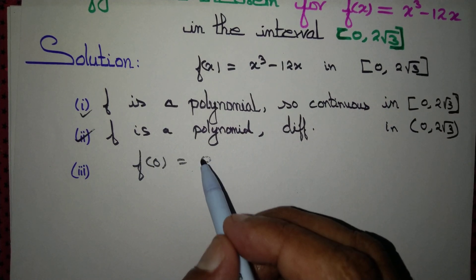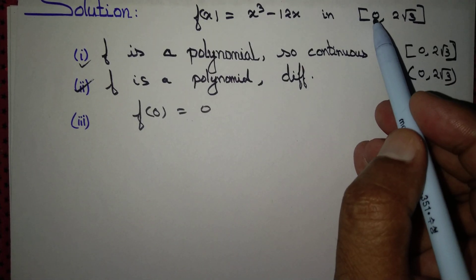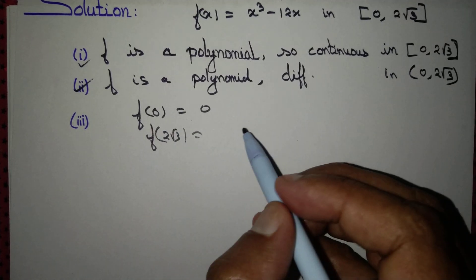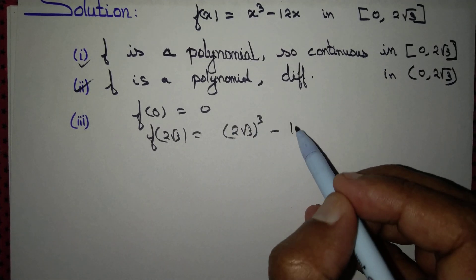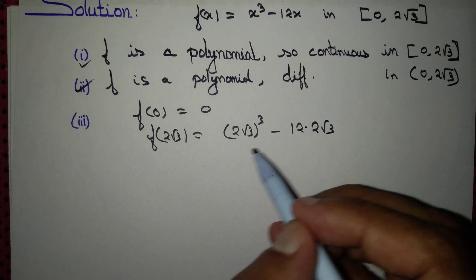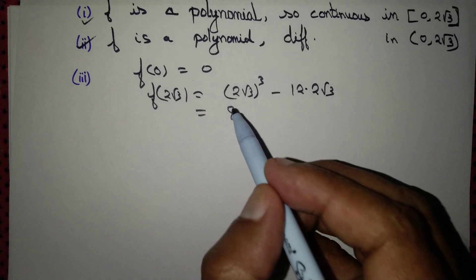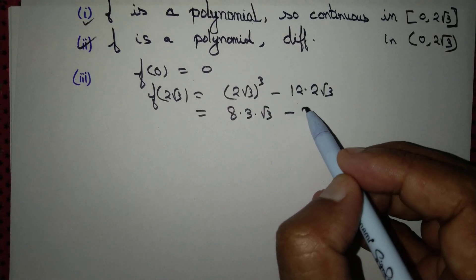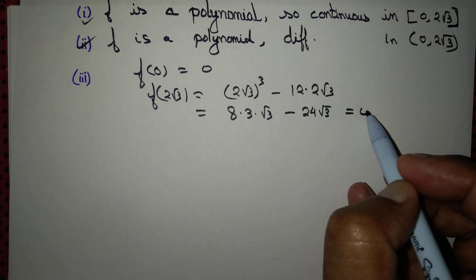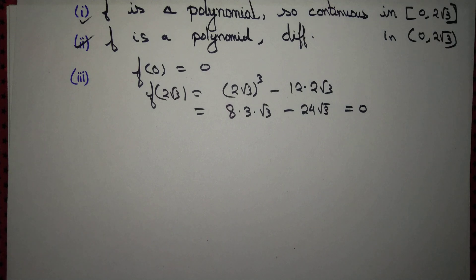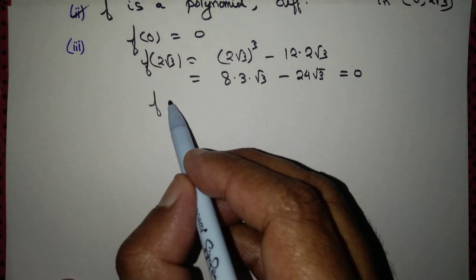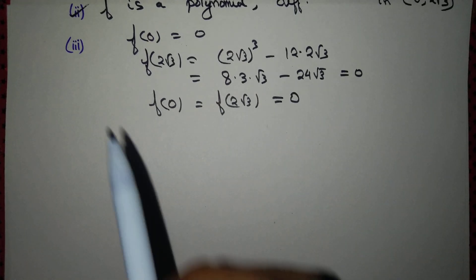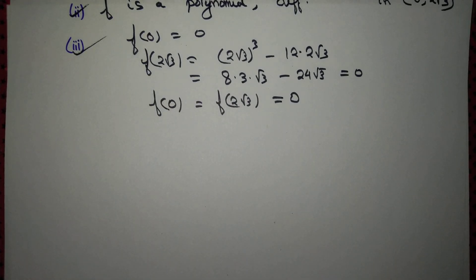f(0) = 0. For f(2√3): (2√3)³ minus 12 times 2√3. 2 cubed is 8, √3 squared is 3, giving 24√3 minus 24√3 = 0. So f(0) = f(2√3) = 0. The value of the function at the endpoints are equal, so all three criteria are satisfied and Rolle's theorem is applicable.